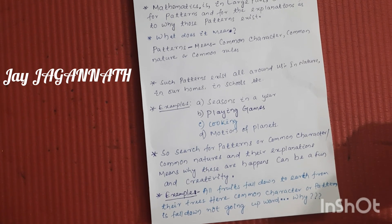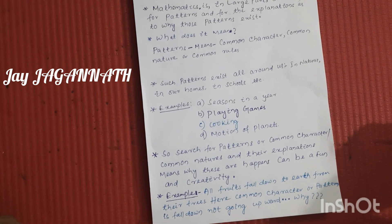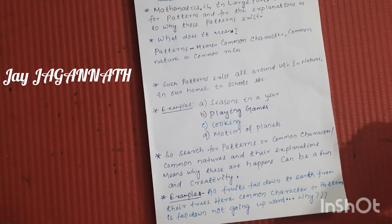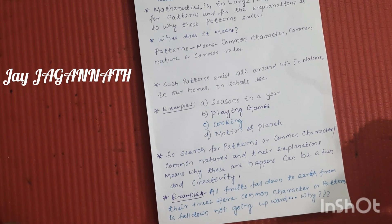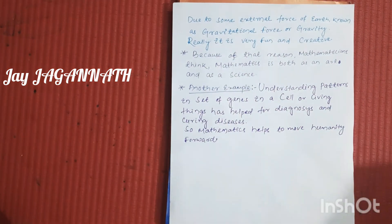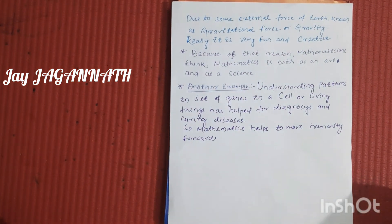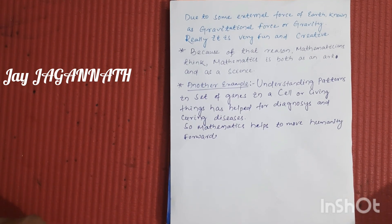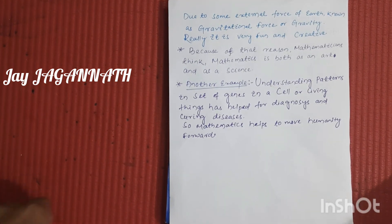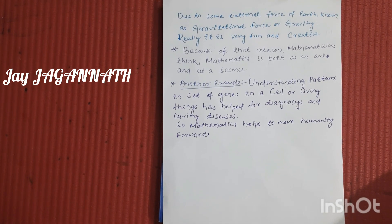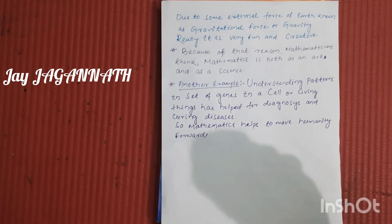For example, all fruits fall down to the earth from their tree. Here the common character or common pattern is falling down — not going upwards. Why? Due to some external force of the earth known as gravitational force, or gravity.